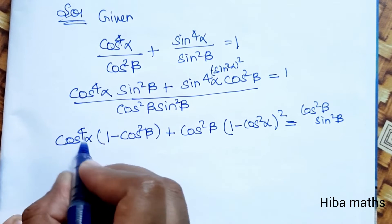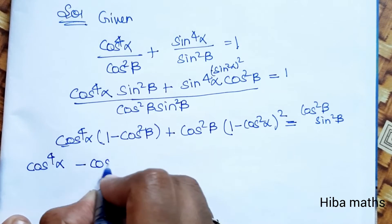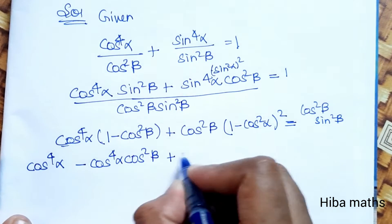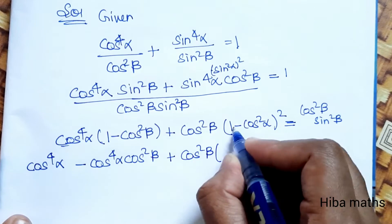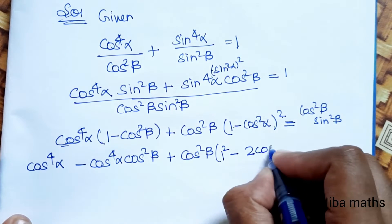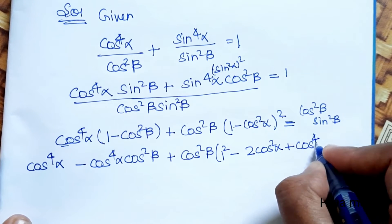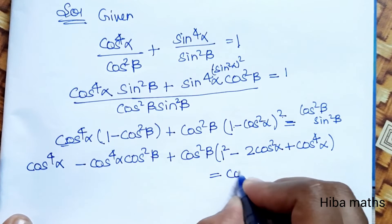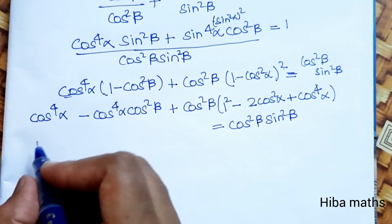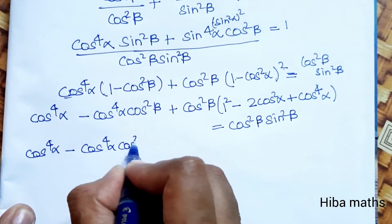Expanding cos⁴α: cos⁴α·(1) − cos⁴α·cos²β + cos²β. This is of the form (a − b)² = a² − 2ab + b². Here a = 1, b = cos²α, so 1² − 2·1·cos²α + cos⁴α, which equals cos²β·sin²β.